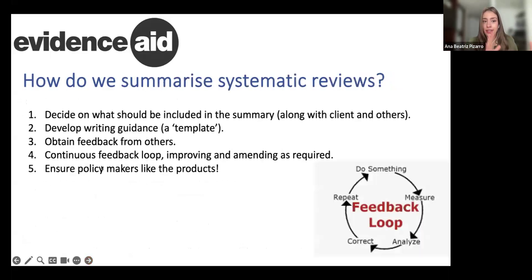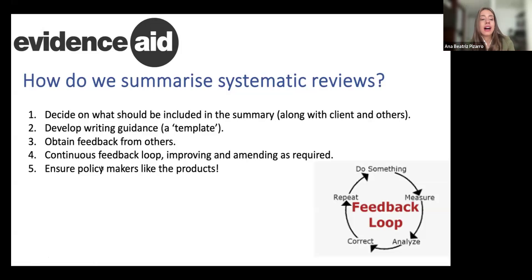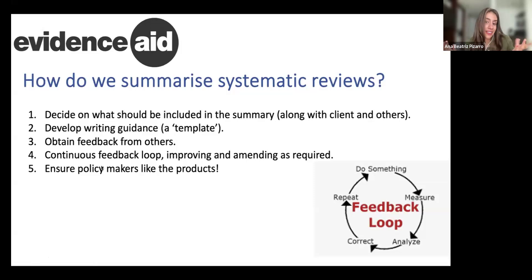How does EvidenceAid summarize systematic reviews? First, we decide on what should be included in the summary, along with the client and others. Second, develop a writing guidance or template. Third, obtain feedback from others. Fourth, a continuous feedback loop — improving and amending as required, sometimes it takes a lot — and ensuring policymakers like the products. It is a feedback loop.